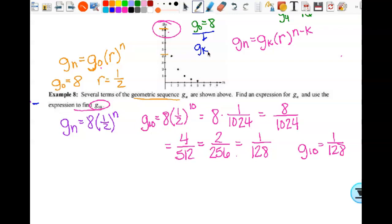So when I substitute it in here, g sub n is equal to g sub k, which is 8, times r, which is 1 half, to the n minus k power. What is k? Zero. And so that's why it ends up being that even if I use that formula. If you're worried about getting confused with that, just use this formula and then it just naturally happens and you don't have to worry about it.